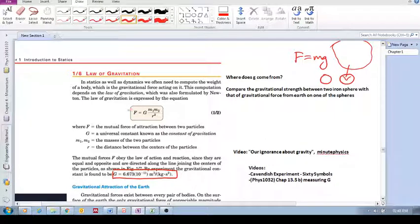So this is generally called the universal law of gravitation, but also I'd like to recommend this video by MinutePhysics. It's called Our Ignorance About Gravity. And so our assumption is that this law of gravitation is valid from the very small all the way to the very large.